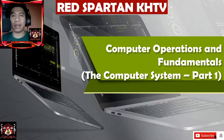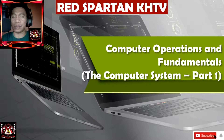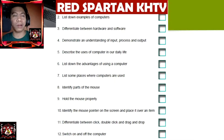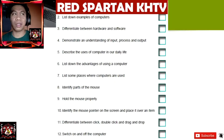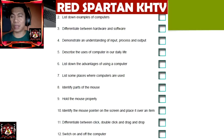For our lesson today, this is Part 4 of Computer Operation and Fundamentals. The first topic is the Computer System. The objectives of this first lesson are: first, identify the parts of the computer; second, list down examples of computers; third, differentiate between hardware and software; fourth, demonstrate an understanding of input, process, and output.